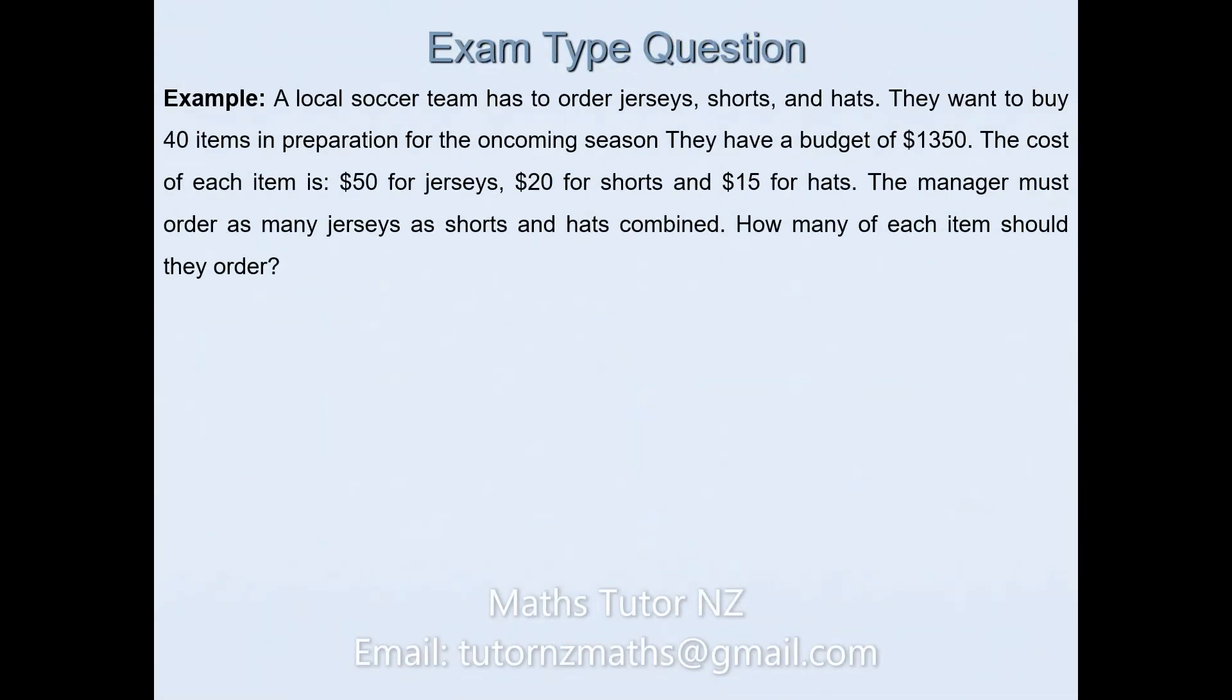In this question, a local soccer team has to order jerseys, shorts and hats. They want to buy 40 items in preparation for the oncoming season. They have a budget of $1,350. The cost of each item is $50 for jerseys, $20 for shorts and $15 for hats. The manager must order as many jerseys as shorts and hats combined. The question asks how many of each item should the manager order.